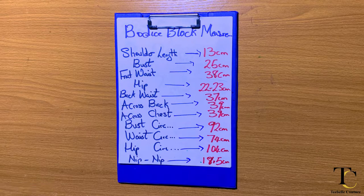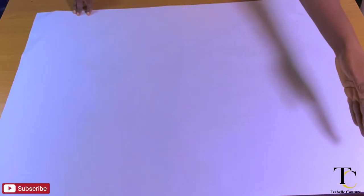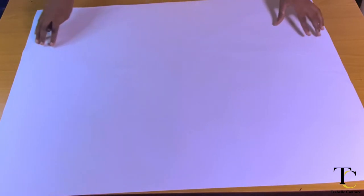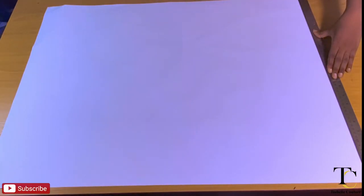I'm going to be using just one single pattern paper to draft because I'm of average height. For people that are bigger, you need about one and a half sheets — measure the length from your shoulder point to your hip, then measure your hip divided by two plus a few centimeters, cut it off, and join it together with masking tape. But for me, I'm just going to be using this single pattern paper.